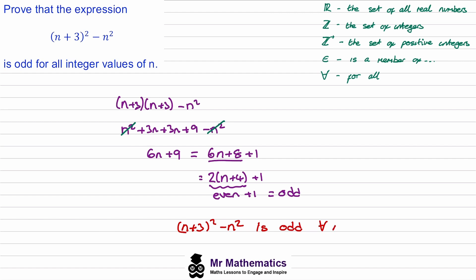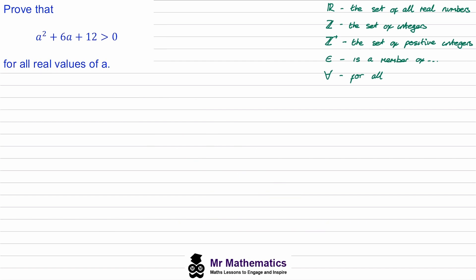Let's try another example. In this example we've been asked to prove that a² + 6a + 12 is always greater than zero for all real values of a. When we have a question like this, it's a good idea to visualize this as a graph.